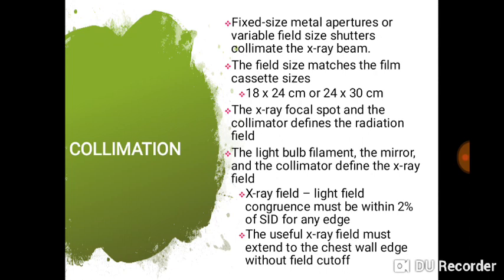There is collimation of the beam, just like any radiographic procedure employing ionizing radiation, which is harmful on exposure to living cells. It is important that collimation is adequate — the field size matches the film cassette size so you don't expose beyond that. The light bulb filament, the mirror, and the collimator define the X-ray field.